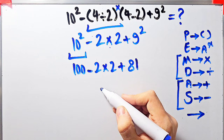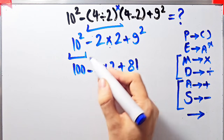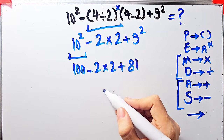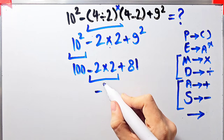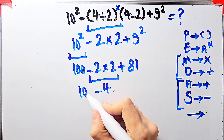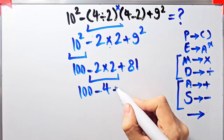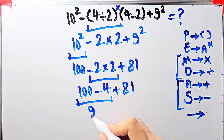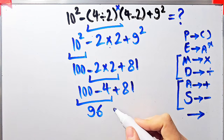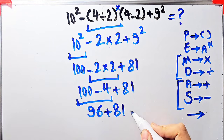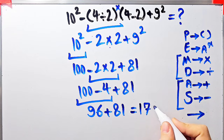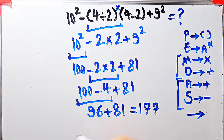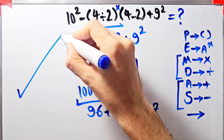Now we have one hundred minus two times two, plus eighty-one. We have subtraction, multiplication, and addition. We simplify the multiplication first: two times two equals four. Now the question is one hundred minus four plus eighty-one. One hundred minus four equals ninety-six; ninety-six plus eighty-one equals one hundred seventy-seven. The final answer equals one hundred seventy-seven. Thanks for watching — please subscribe to the channel and leave a comment. Goodbye!